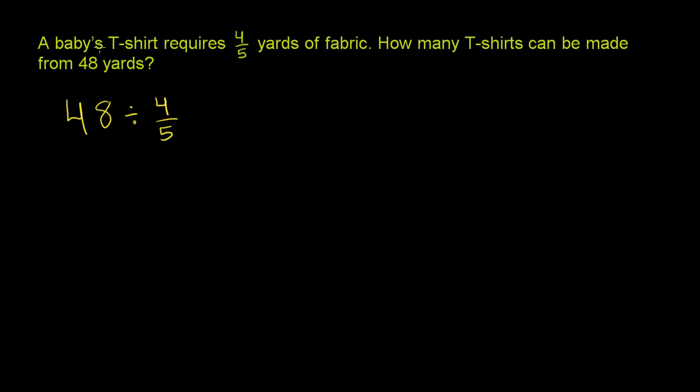Because each of those groups can make one baby's T-shirt. If you give me four-fifths of a yard, one baby's T-shirt. So the number of groups of four-fifths is the number of baby's T-shirts.